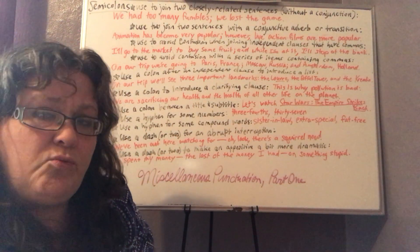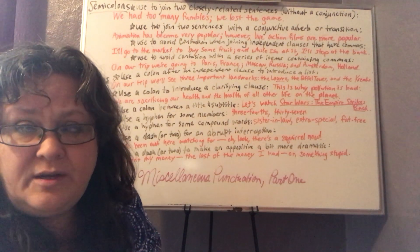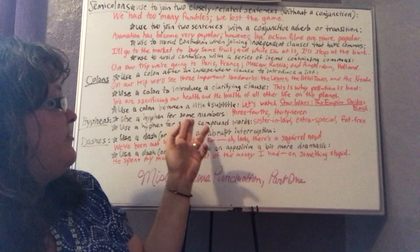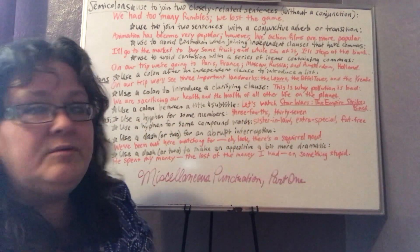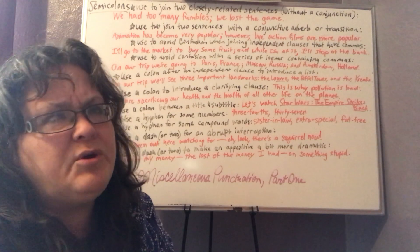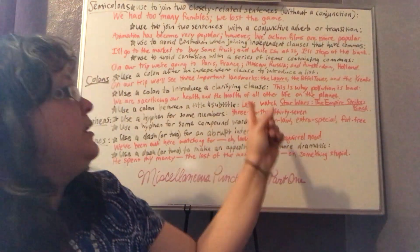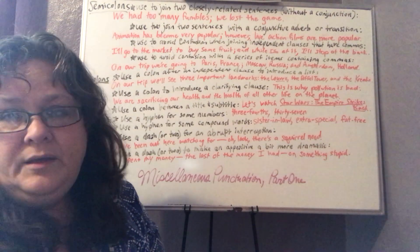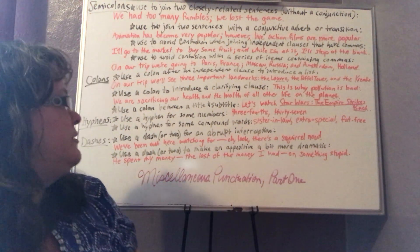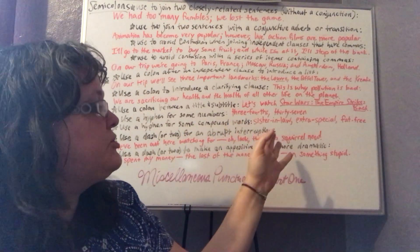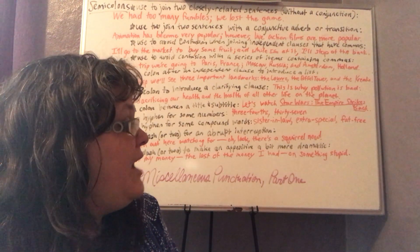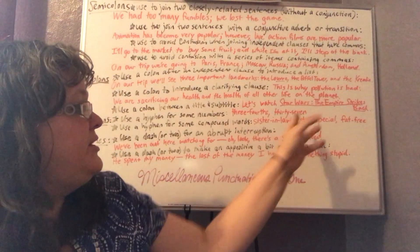Hyphens need to have no space before or after them. Dashes should have a space before and a space after. With those mechanics covered, here are a couple of things about hyphens — there is more in your book. Use a hyphen for some numbers: three-fourths, thirty-seven, 99/100 (though you'd probably just say 99%). Use a hyphen for some compound words: sister-in-law, extra-special, fat-free. These apply especially with compound adjectives.